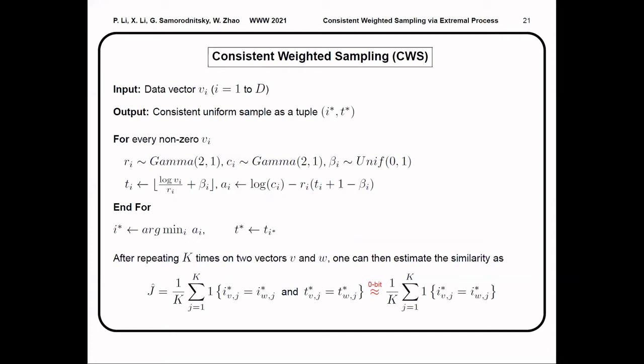The formal definition of CWS is given in this algorithm. For each non-zero entry v_i, we generate t_i and a_i using some random numbers. And the output hash sample is a two-dimensional tuple. The first element, i*, is the argmin of the a_i. And the second element, t*, is defined as t_{i*}. To construct a Jaccard estimator, we repeat the CWS procedure for k times of two vectors v and w. And then we can estimate the Jaccard similarity by the collision count of the hash samples between v and w.